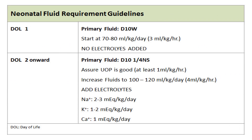This is the neonatal fluid requirement guideline. On day 1, start with 70–80 ml per kg per day with 10% dextrose alone — no electrolytes added. After day 2, the fluid is 3/4 D10 and 1/4 NS. Follow urine output and ensure it is at least 1 ml per kg per hour, up to 3 ml per kg per hour. Increase fluid to 100–120 ml per kg per day, increasing daily by 20 ml per kg per day. Add electrolytes after day 2: sodium 2–3 mEq per kg per day by making the fluid D10 with NS, and add potassium 1–2 mEq per kg per day and calcium 1 mEq per kg per day after day 2 of life.